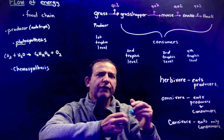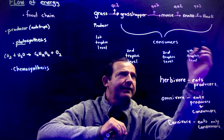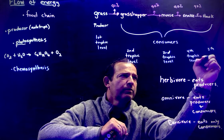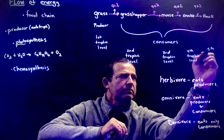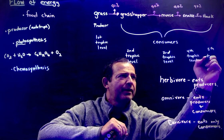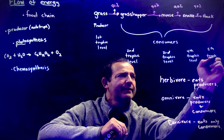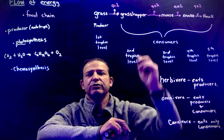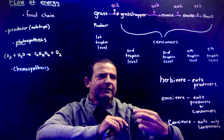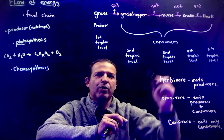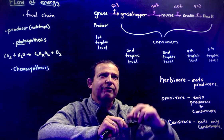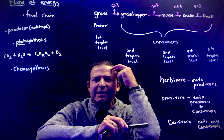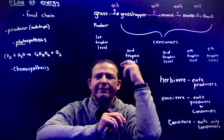Trophic levels usually don't exceed more than about the fifth level. Why? Because at each level you're losing energy, and so there's just not enough energy to keep going. This is a simple representation — if you talk about a simple feeding relationship, that is a food chain.